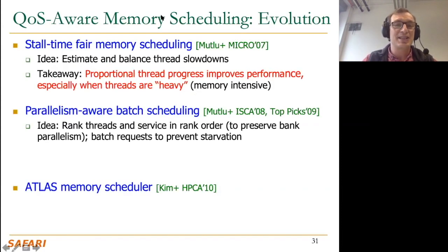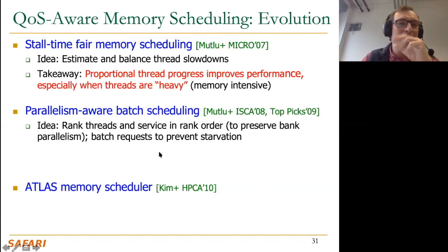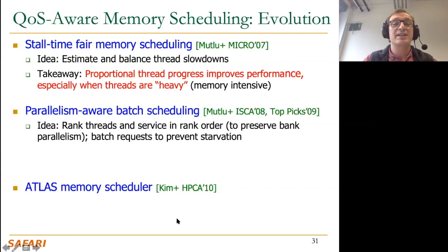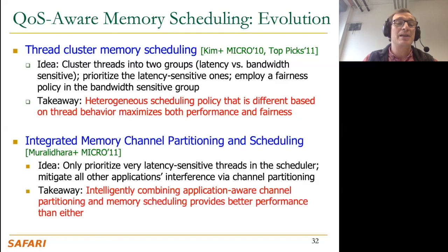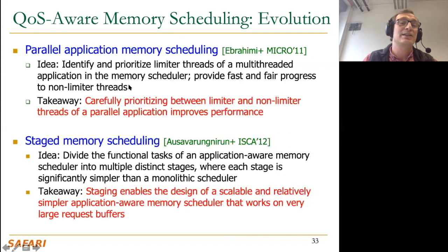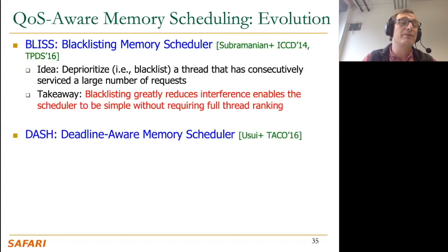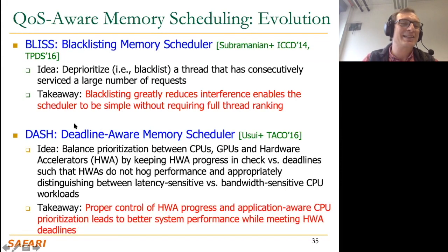I'm going to give you an evolution of quality-of-service-aware memory scheduling from my perspective. This work started in 2006 and has had a lot of impact. Many of these ideas went into different types of products. We're going to cover some of these works. Hopefully we'll get to BLISS, because this is something you're going to implement in your lab. You can also implement Atlas, but you should be happy you're not implementing something like DASH, which is one of the more complicated schedulers because it handles a lot of cases.